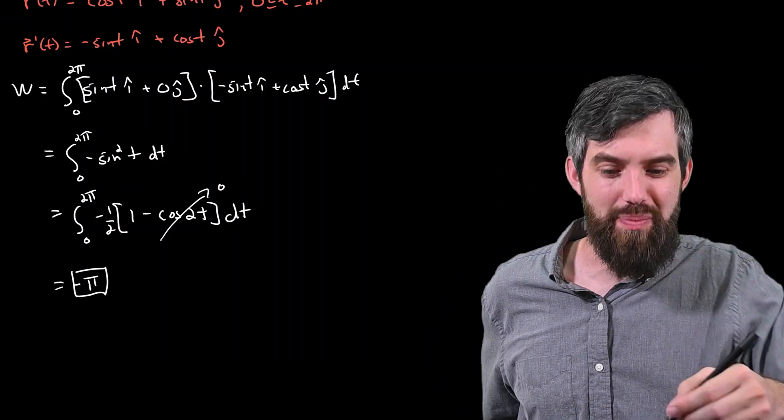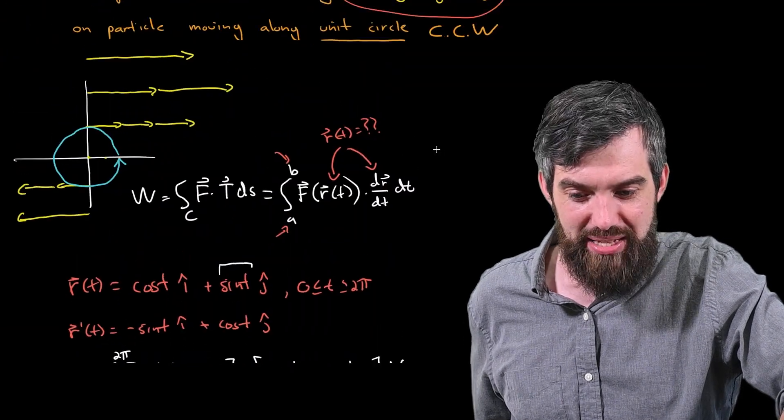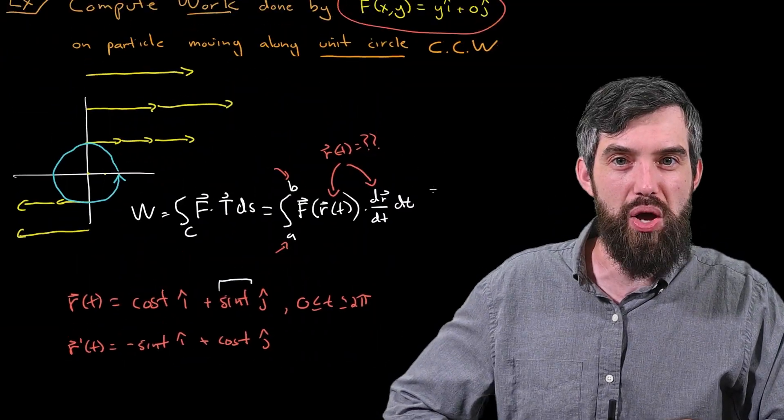Well, perhaps we should scroll up to the beginning and then look at the vector field to see, well, what does that make sense? Does it make sense to have a negative work in this context?